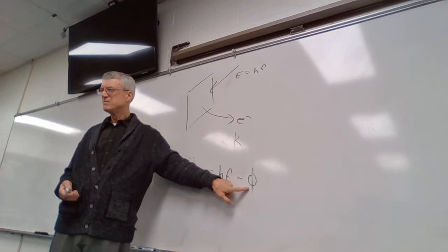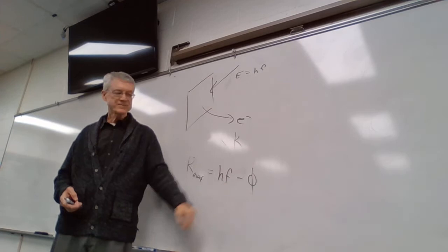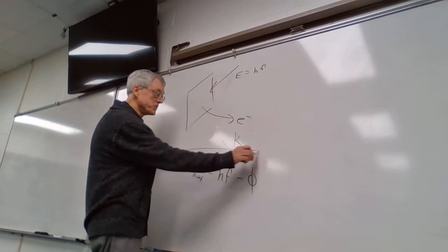The work function depends on the metal — different metals have different work functions. So phi is a constant, but it's a constant for that particular material. Each metal has its own work function. That's the photoelectric effect, and everything said so far is what you covered yesterday, which is also on your equation sheet.